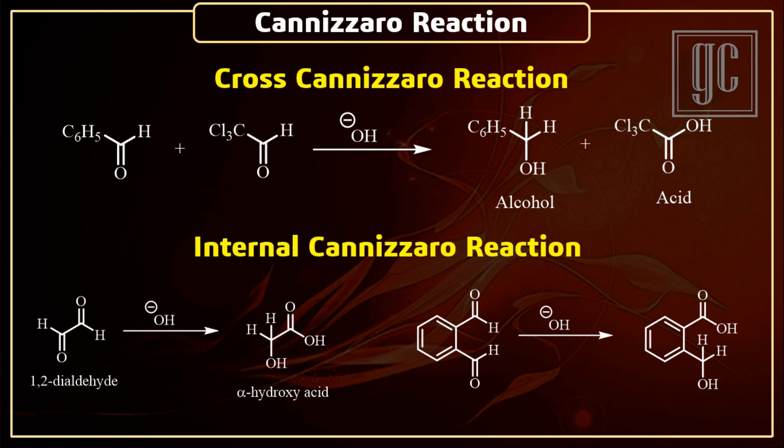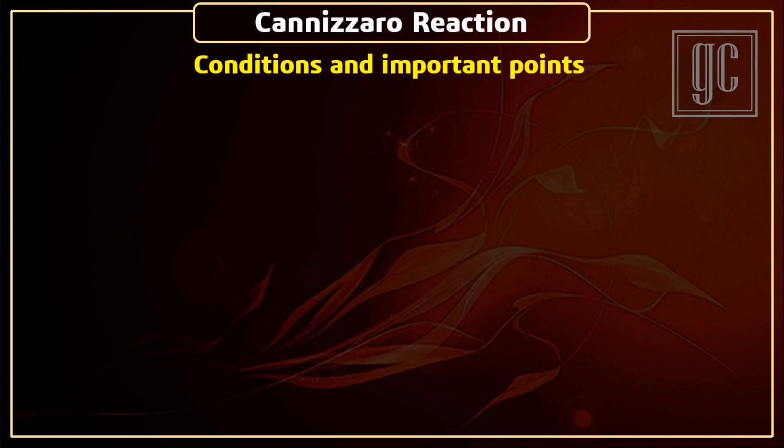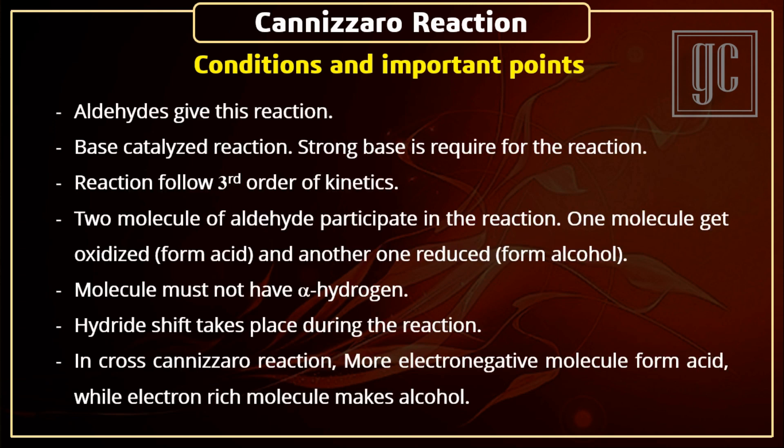These are the examples of the internal Cannizzaro reaction. The first example shows the internal Cannizzaro reaction in aliphatic aldehydes, and the second example shows the internal Cannizzaro reaction in aromatic aldehydes. In both examples, one aldehyde is converted into an acid by oxidation and another aldehyde group is converted into alcohol by reduction.